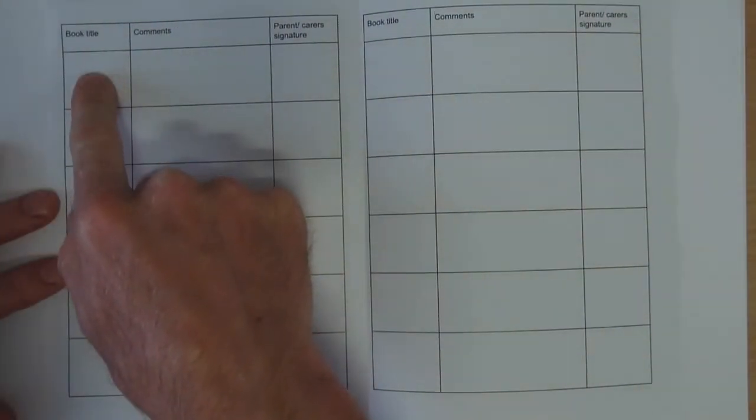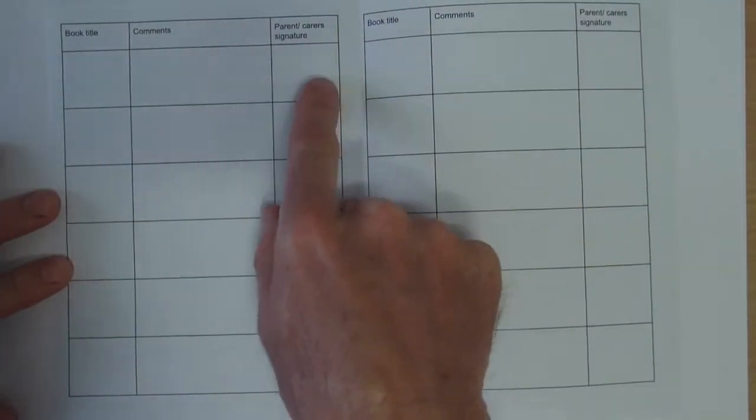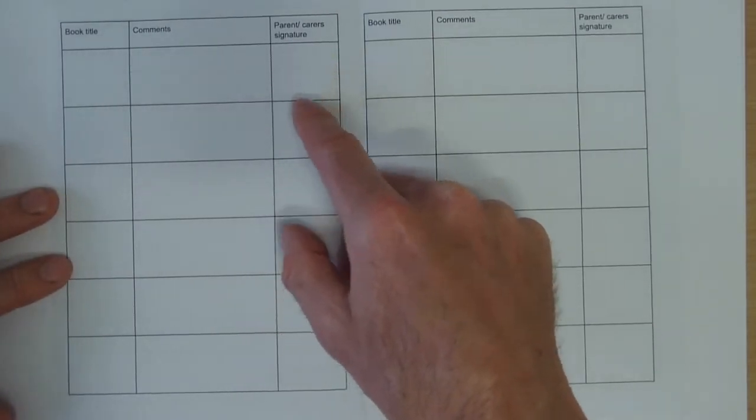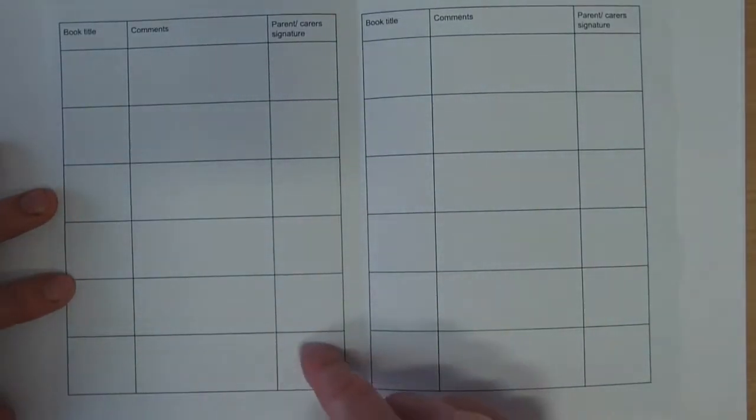So write the title in there, if you can fit it write a bit about the book, and then get a grown up to sign it off to say you've read it. Now this one has six and I think for all the kids we might have done five.